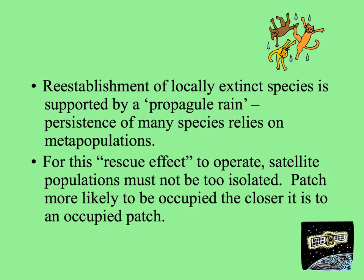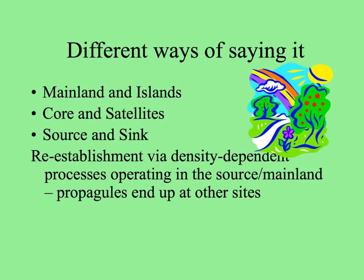A patch is more likely to be occupied the closer it is to an occupied patch or to the core population. There are several ways of describing this: mainland population and islands, core and satellites, or source and sink. They all depend on reestablishment via density-dependent processes that operate in the source, mainland, or core population where conditions are good.